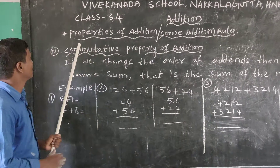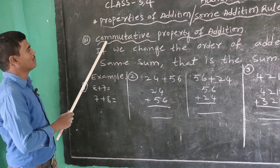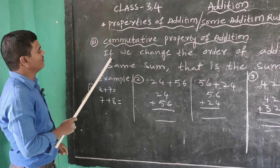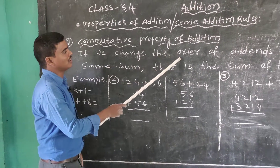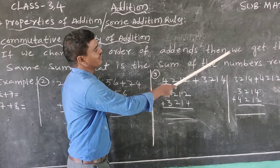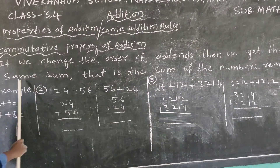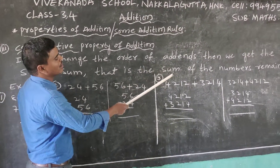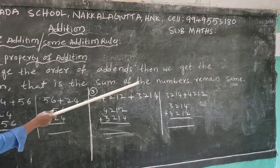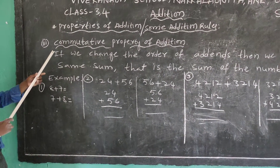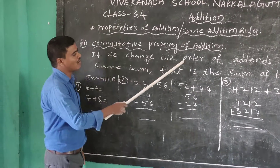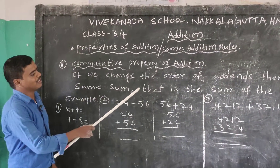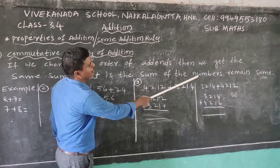Next property: the commutative property of addition. What does commutative property of addition mean? If we change the order of addends, then we get the same sum. That is, the sum of the numbers remains the same.